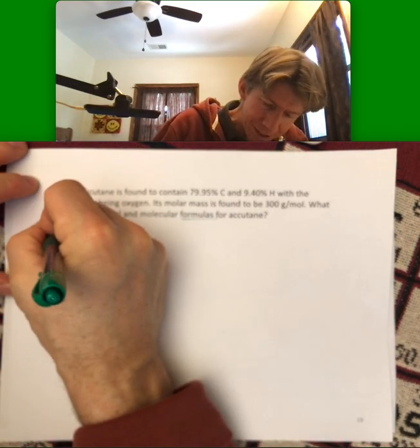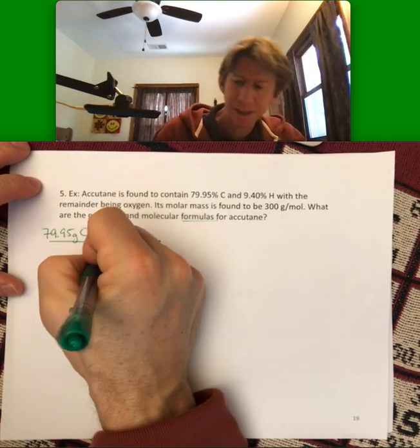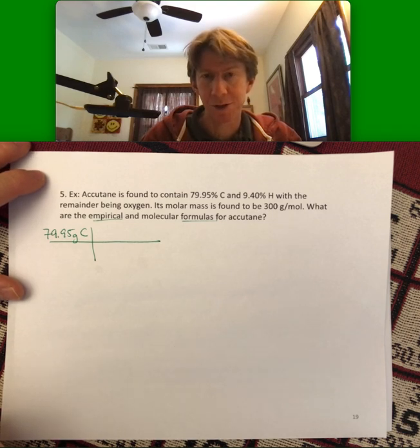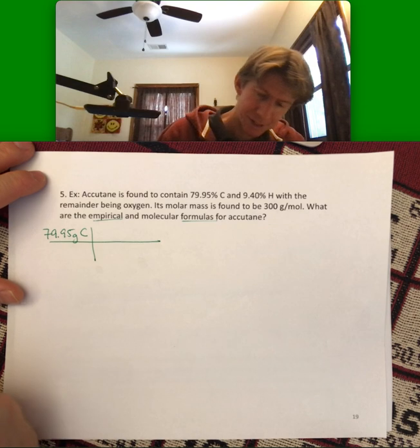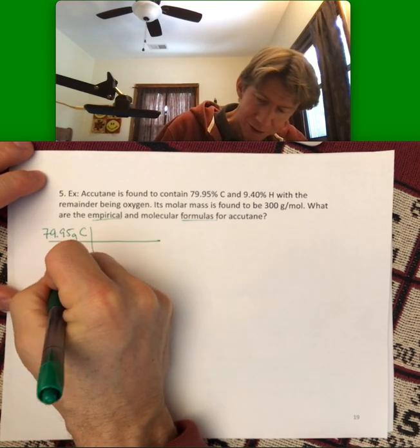Our process is turn our percents into grams, turn our grams into moles, divide by the smallest number of moles to find small whole numbers for the empirical formula. And let's see. And again, there are a couple ways to do this. That's my approach to it.